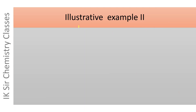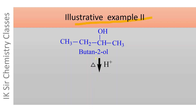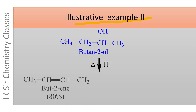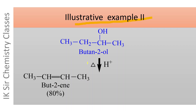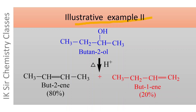Let us see another illustrative example of a regioselective reaction. This is butane-2-ol, and when it is heated in the presence of an acid catalyst, two products are formed. One product is but-2-ene and another product is but-1-ene. But-2-ene is obtained in 80% yield while but-1-ene is obtained in 20% yield. But-2-ene is formed predominantly as the major product, and hence this is an example of a regioselective reaction, since these two products are structural (constitutional) isomers of each other.